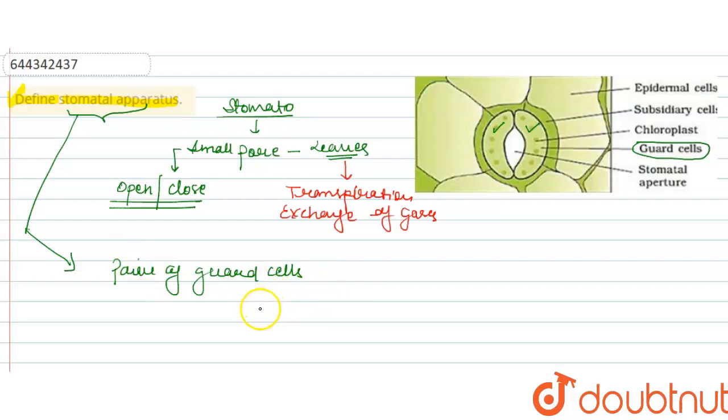Its function is the transpiration and exchange of gases. All right, so this the structure, we can see these two are the bean shaped structure.